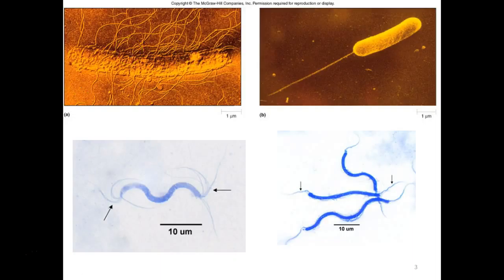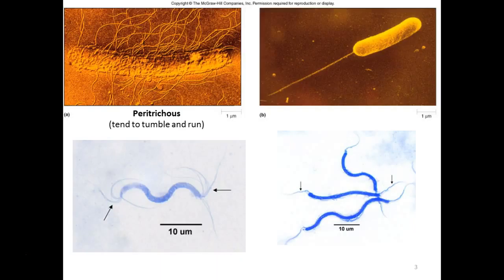The organism completely covered in flagella — this is peritrichous. Peri meaning many. These guys tend to tumble and run around. The one we're looking at that's forming chains is peritrichous, hence the kind of tumbling around movement that it has.